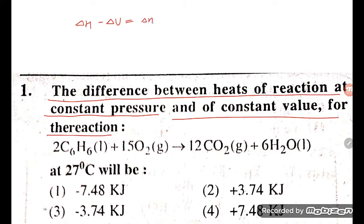So delta ng RT — let's update here. The delta ng value: how much is there? Number of products minus number of reactants, so delta ng equals np minus nr. Products are 12, reactants are 15, so it is coming to minus 3.